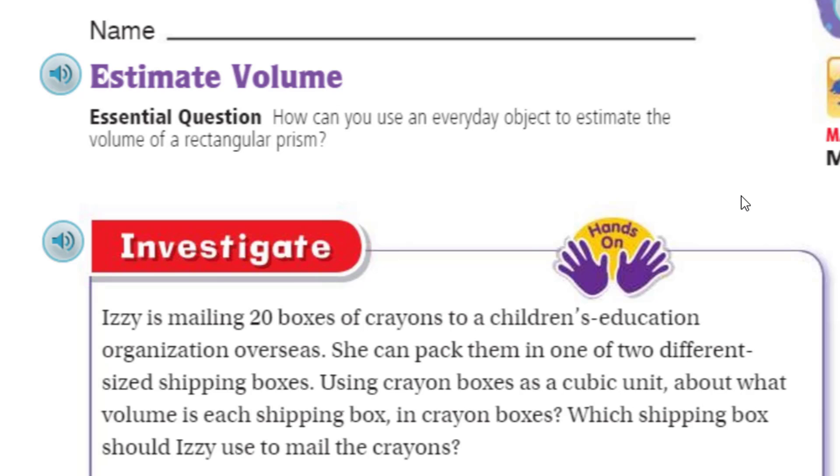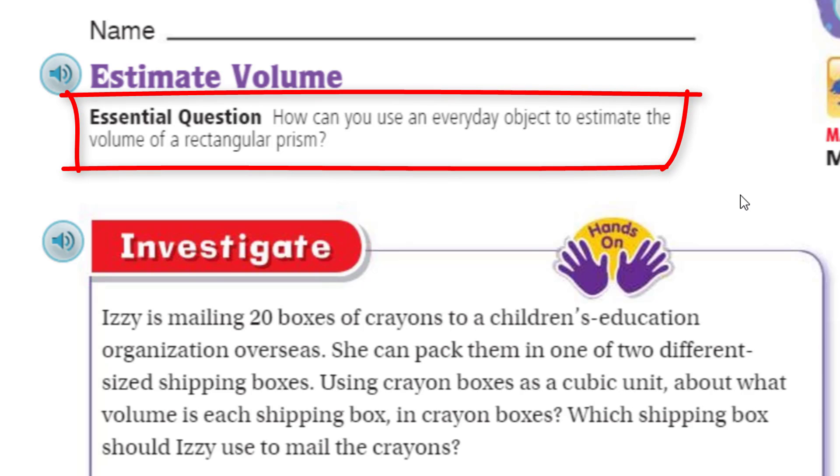I kind of think of probably the first thing is probably soda. If you drink soda, some people across the country call it pop, which is kind of weird. Anyway, we do have an essential question. That's right. It's our learning target. It's our focus. It's our learning intention. What are we intending to learn? How can you use an everyday object to estimate the volume of a rectangular prism? Cool.